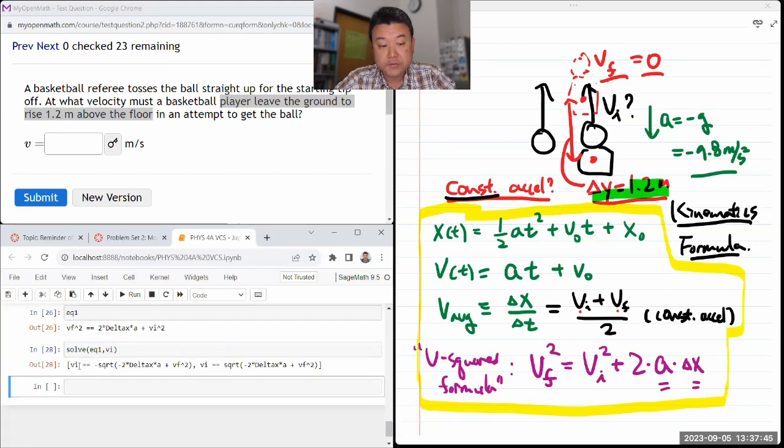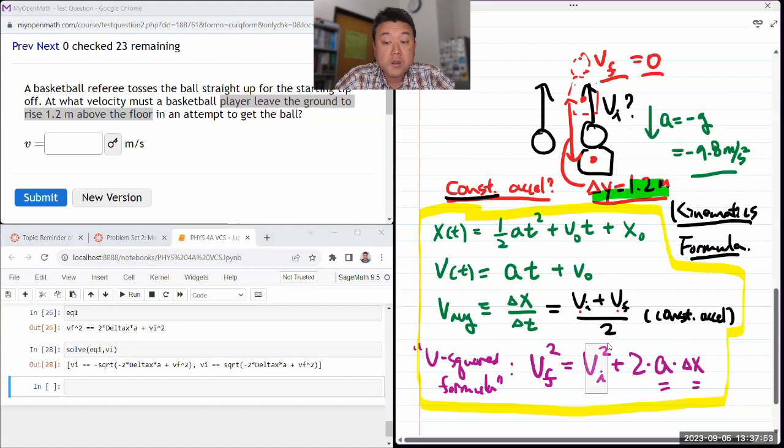When I do that, it gives me two solutions for v initial. I think you can kind of see from here one is negative, one is positive, because of this square. Both the negative and positive versions can be solution, so we're just going to pick the positive solution.